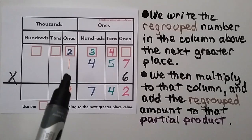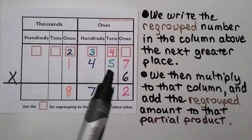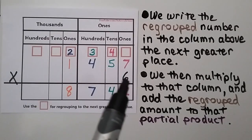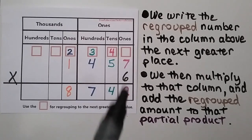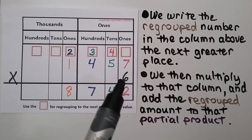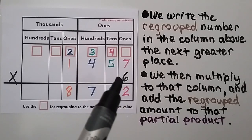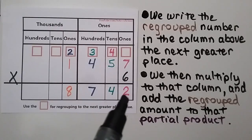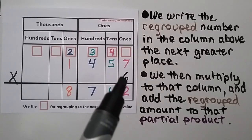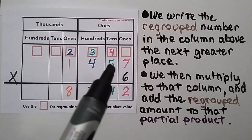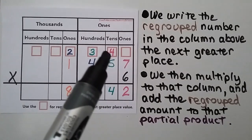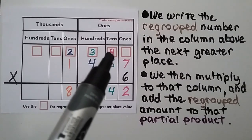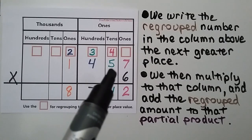Here we have 1,457 times 6. We start with the ones place and do 6 times 7, which is 42. We put the 4 in the tens place and the 2 in the ones place. Then we do 6 times 5, which is 30. We add the 4 more that were regrouped, and we have 34.